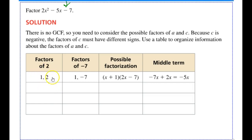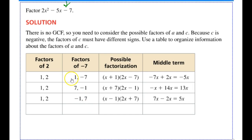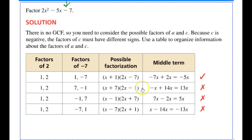My possible factors of 2 are 1 and 2. My factors of negative 7 could be 1 and negative 7, or 7 and negative 1. Since the values 1 and 2 are different, I also have to try switching the negative sign to the first term — giving negative 1 and 7 — and then a fourth alternative with the negative sign switched again. After trying all four, I look back and see the middle term was negative 5x. So my final factorization is 2x squared minus 5x minus 7 equals the quantity x plus 1 times the quantity 2x minus 7.